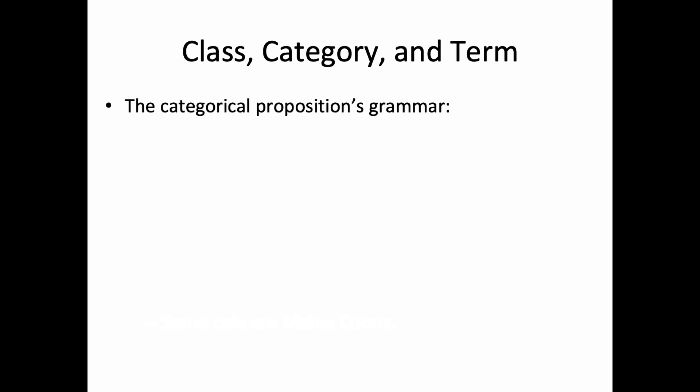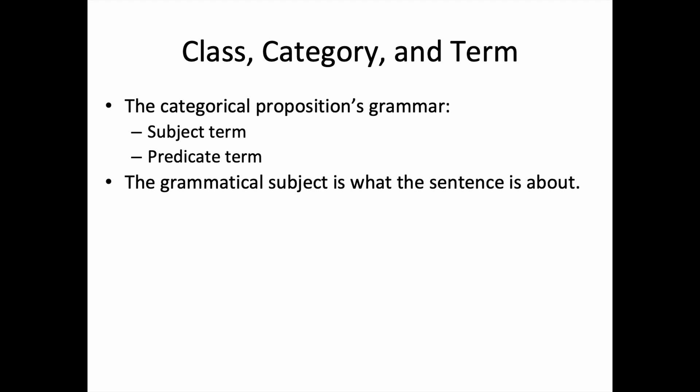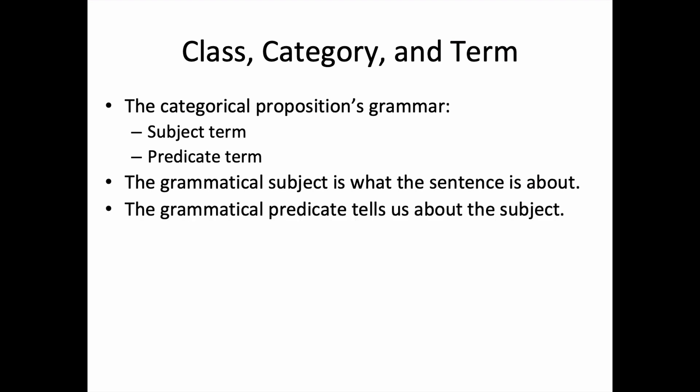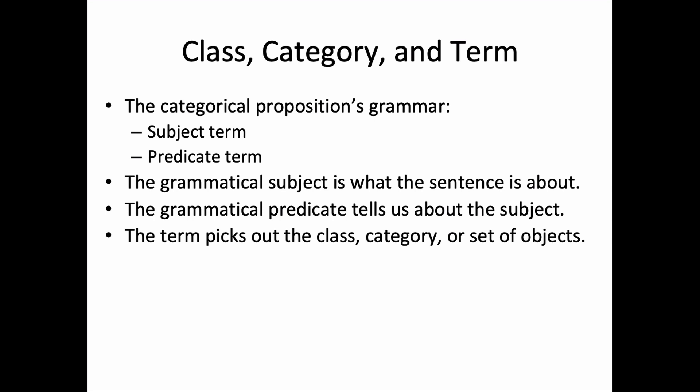Let's pull together the terms we've been using. A categorical proposition is a grammatical sentence. We have a grammatical subject, reflected by the subject term, and a grammatical predicate, reflected by the predicate term. The grammatical subject is what the sentence is about; the grammatical predicate tells us about the subject. In a categorical proposition, the term — the noun or noun phrase — picks out the class, category, or set of objects in the proposition's subject class or predicate class.